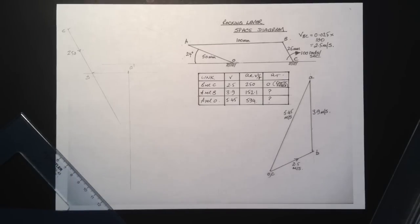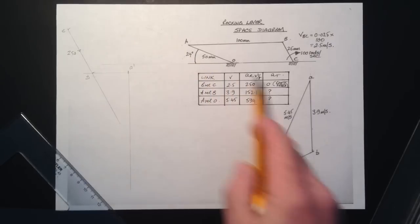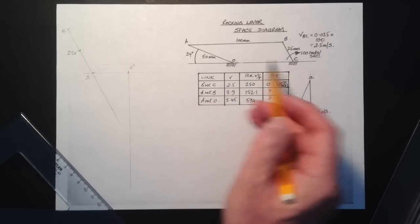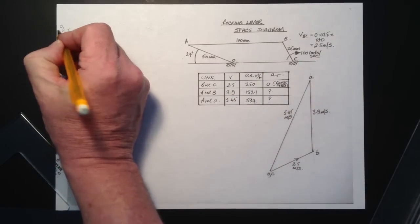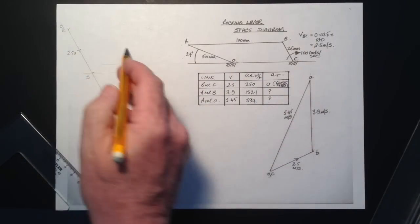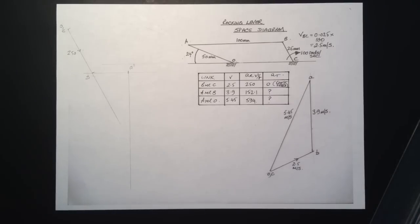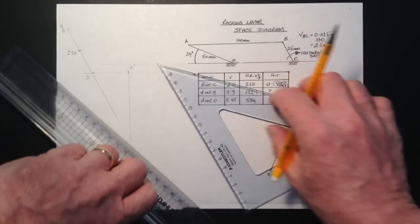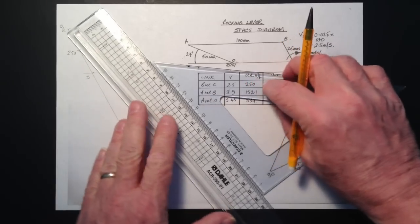Now let's turn our attention to A relative to O where we've been able to work out the radial component. So we know it will be from A towards O, the centre of rotation. And the other thing to be aware of is that because O and C are both fixed points, they are the same point in an acceleration diagram.